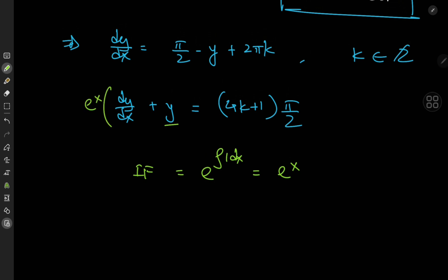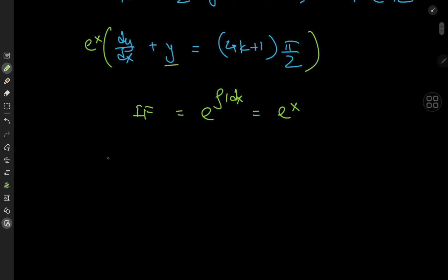Now expanding using our integrating factor, we have e to the x times dy by dx plus e to the x times y, which we recognize as the derivative with respect to x of y times e to the x. And on the right, we have 4k plus 1 times pi by 2 times e to the x.